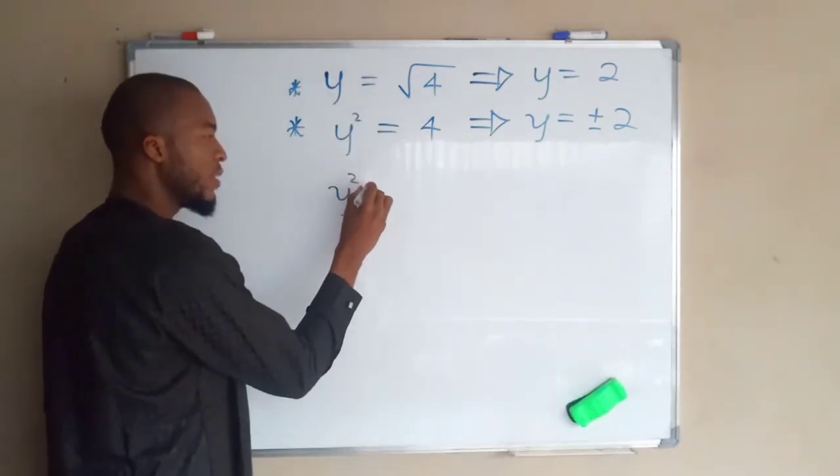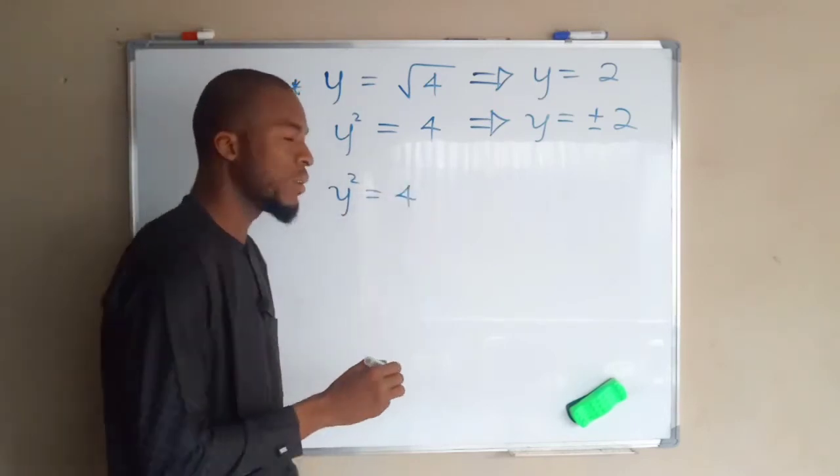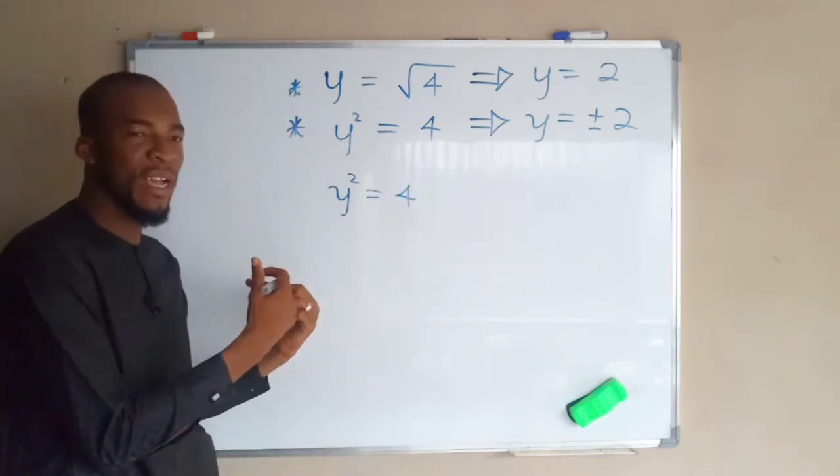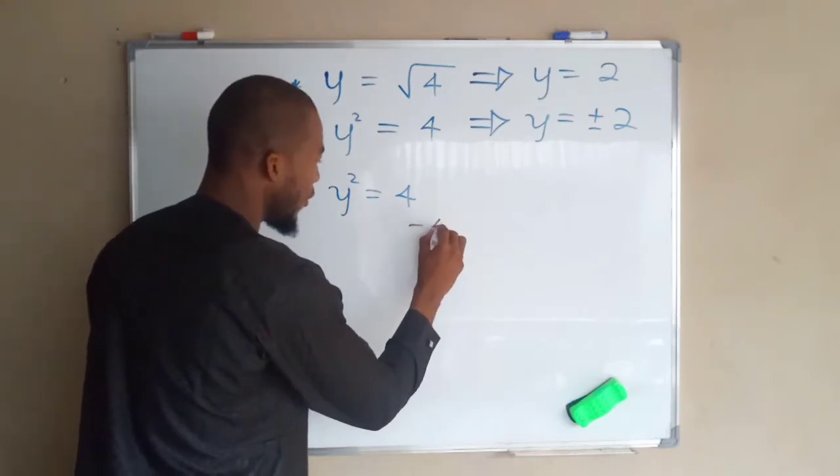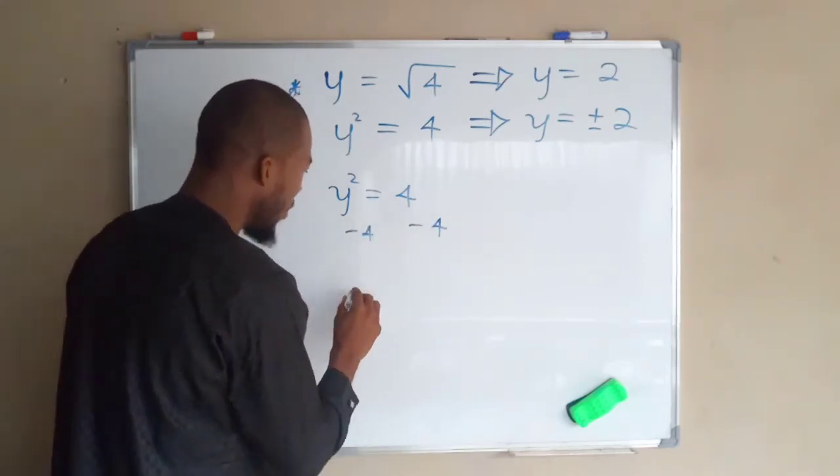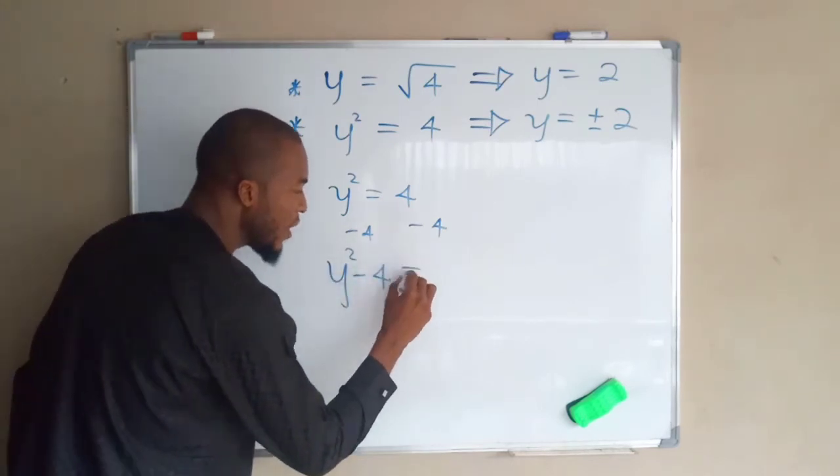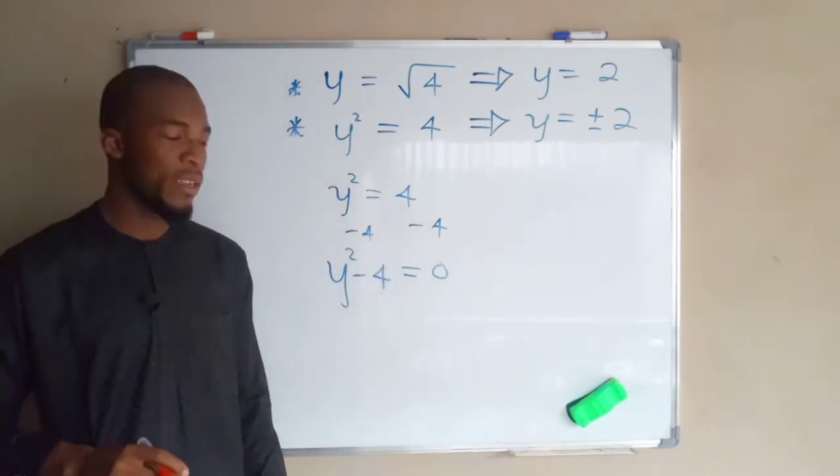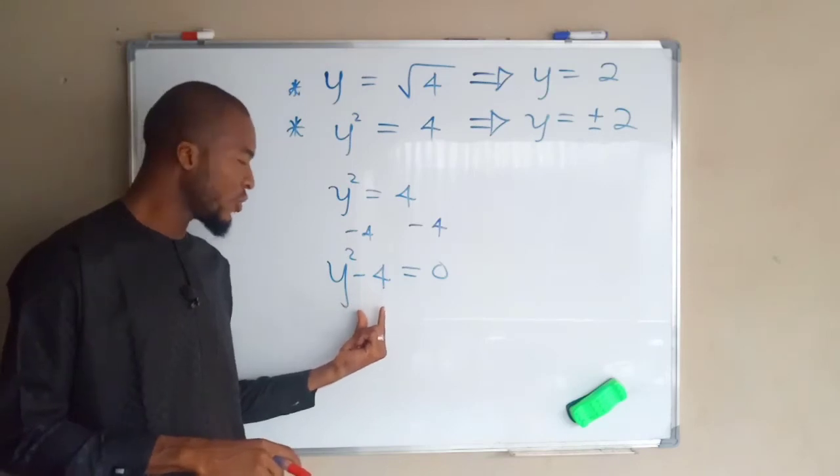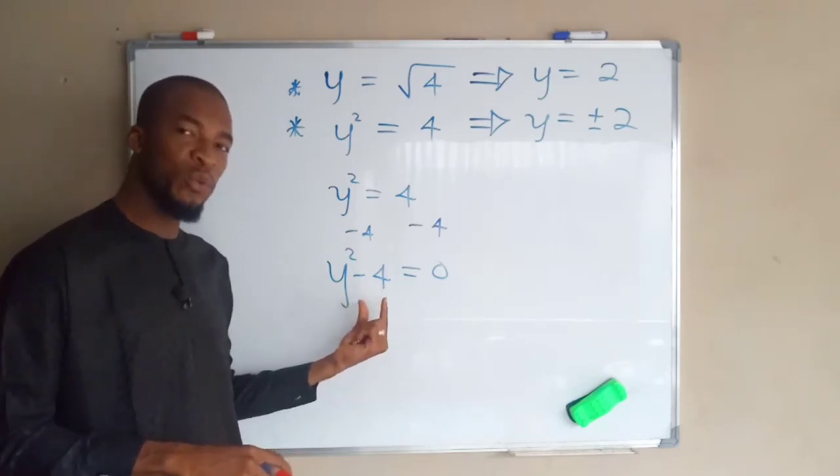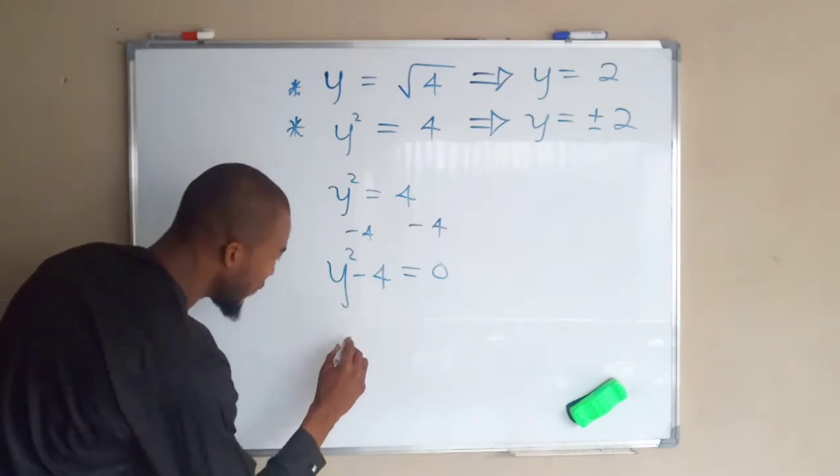If y squared equals four, I can bring everything to the left hand side leaving zero to the other side. So minus four here, minus four here. I will have y squared minus four equals zero. This is a quadratic function which is a difference of two squares.